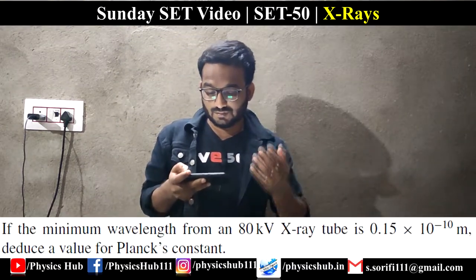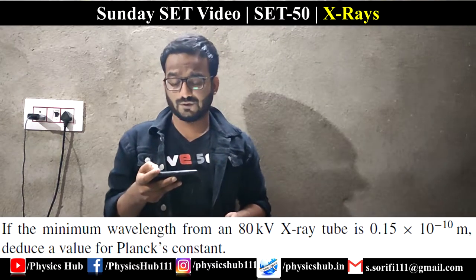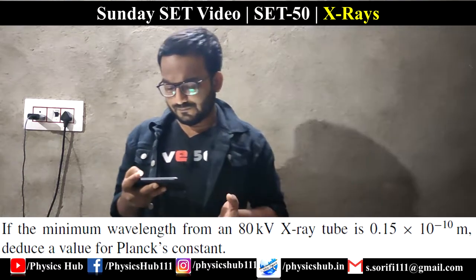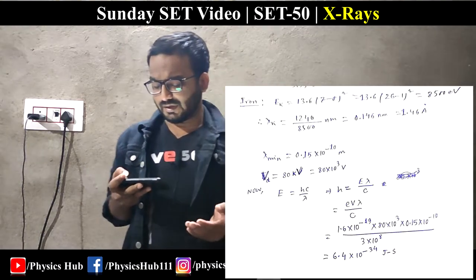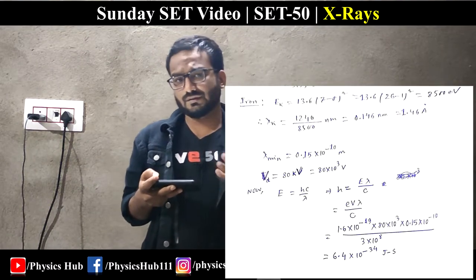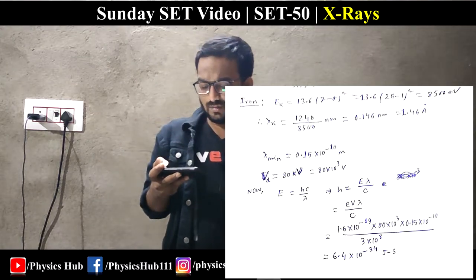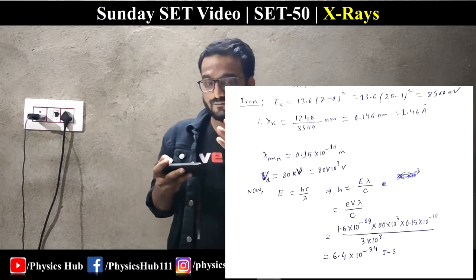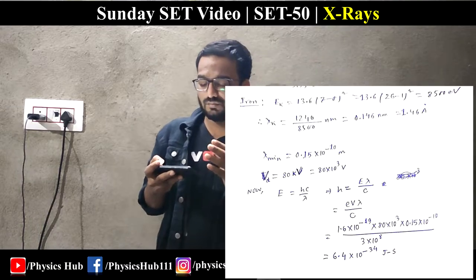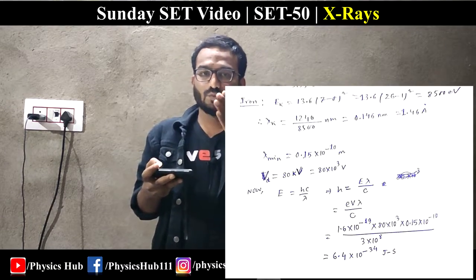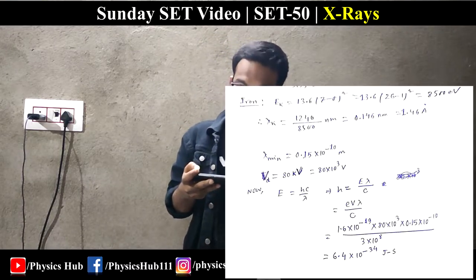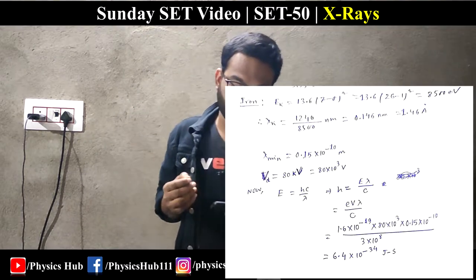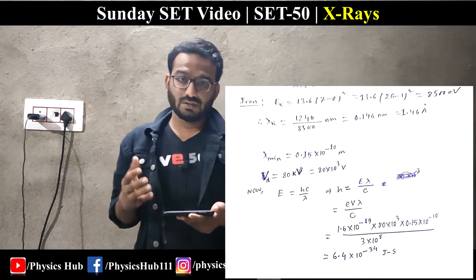Question 3: If the minimum wavelength from an 80 kV X-ray tube is 0.0215 nm (0.215 × 10⁻¹⁰ m), deduce a value for Planck's constant. Using E = hc/λ, we can write h = eVλ/c. With V = 80 kV, λ_min = 0.0215 nm, and c known, substituting gives h ≈ 6.4 × 10⁻³⁴ J·s.